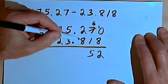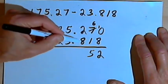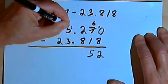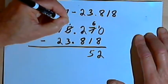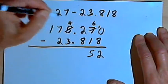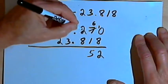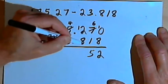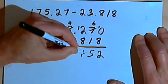Going over to the tenths column, I've got 8 subtracted from 2. Well, I can't do that, so I have to borrow from the next column, from the units column. So I'll turn the 5 in the units column into a 4, and this 2 in the tenths column will become a 12. Now I can subtract 8 from 12, and that's 4.